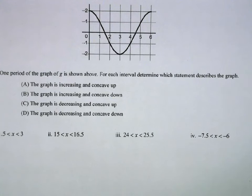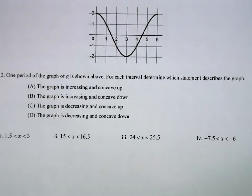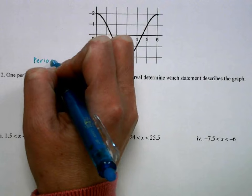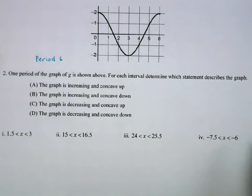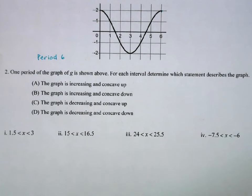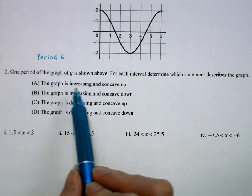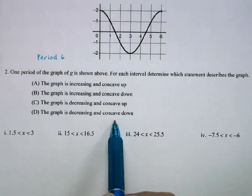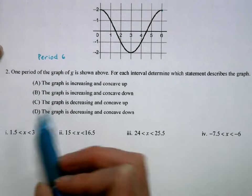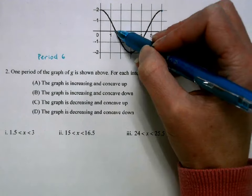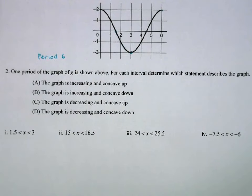I have a graph of a periodic function and one period is shown. It starts at 0 and ends at 6, so we have a period of 6. We're going to match four different statements to different ranges: increasing and concave up, increasing and concave down, decreasing and concave up, and decreasing and concave down. From 1.5 to 3, my graph is decreasing and concave up — that's option C.